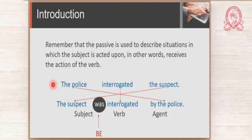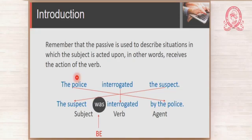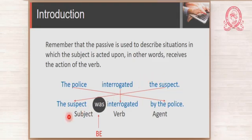Here you have two sentences. This one is active. Let us analyze it. The police did something — interrogated. Who was interrogated? The suspect. The subject is active because they did something, and then something or somebody receives the action. 'The suspect was interrogated.' The action comes from here, and then the action is described here, and here you have the receiver. If you want to change from active to passive, you take the direct object and put it at the beginning — and this is the new subject.